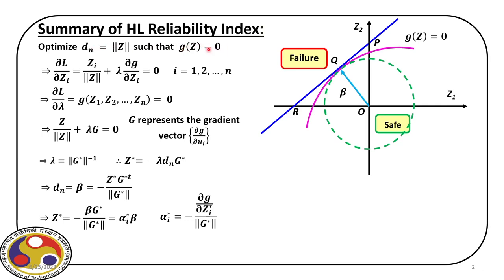We solve this constraint optimization using the Lagrange multiplier technique. At the end of this optimization, we get z star — the optimal point in the standard normal space which lies on the limit surface — and z star equals alpha_i star times beta. The expression for alpha_i star is the direction cosine evaluated at the design point z star. If we have n random variables where i equals 1 to n, we have n direction cosines, and the property of direction cosines states that the sum of squares of alpha_i equals 1.